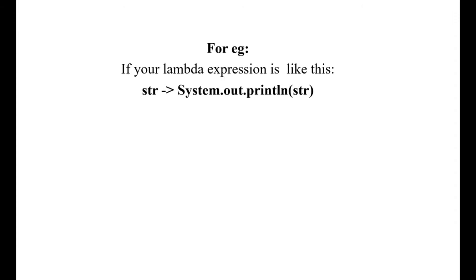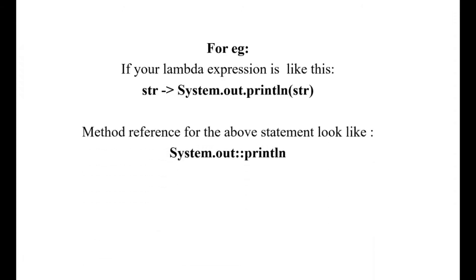This is the lambda expression statement: 'str', the arrow represents the lambda expression, and that will print whatever is passed on the left side - 'str'. The replacement of that lambda expression is System.out, with double colon which denotes the method reference, followed by println.